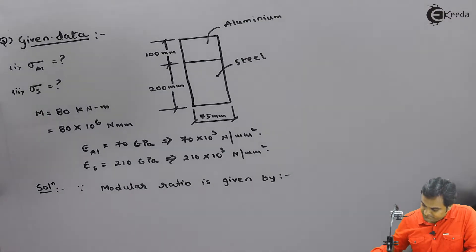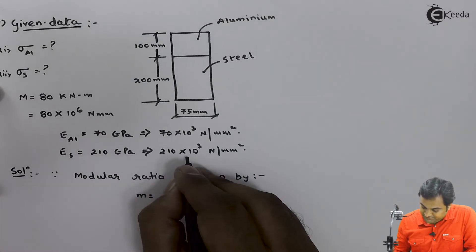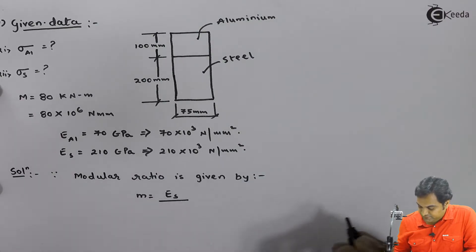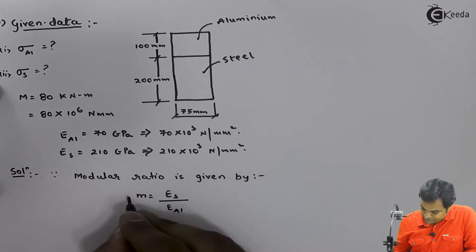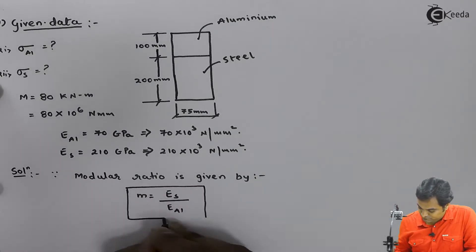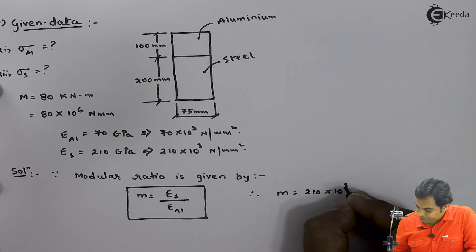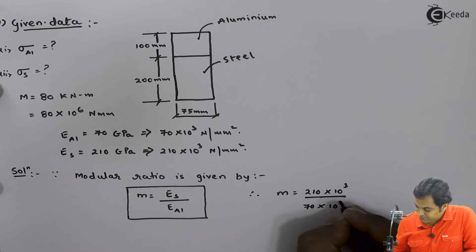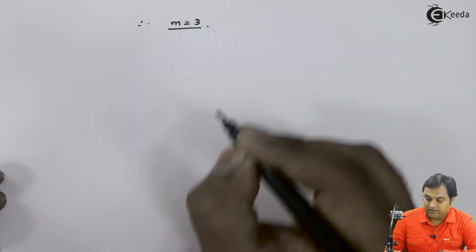The modular ratio m = E_steel / E_al = 210 × 10³ / 70 × 10³ = 3. So the modular ratio is 3.